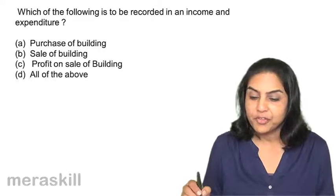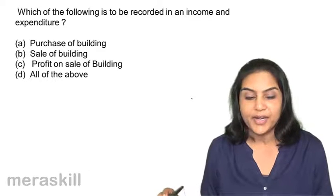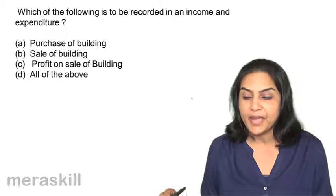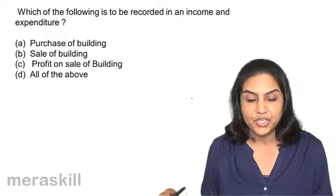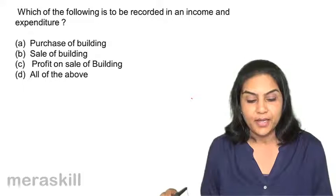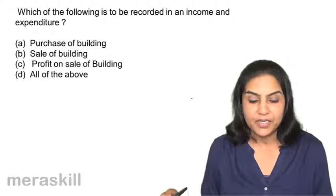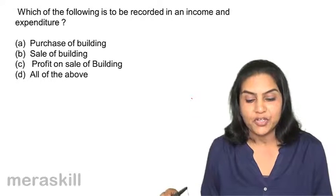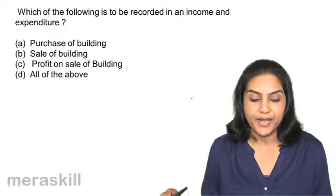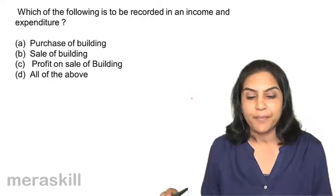Which of the following is to be recorded in an income and expenditure account? A. Purchase of building. B. Sale of building. C. Profit on sale of building. D. All of the above.